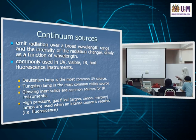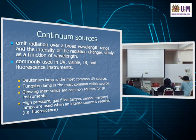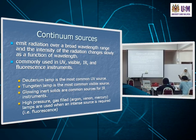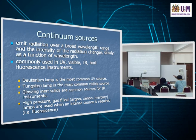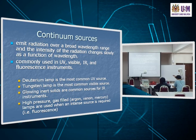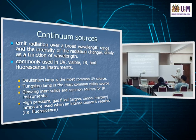Some examples: the deuterium lamp is a source of UV; tungsten is usually used for visible; and then you have your sources for IR spectroscopy — infrared spectroscopy.